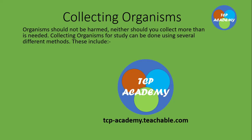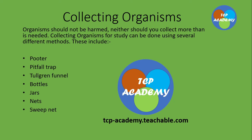Collecting organisms. Organisms should not be harmed, neither should you, more than is needed. Now, collecting organisms for study can be done using several different methods, and these include use of a pooter, pitfall traps, Tullgren funnels, bottles, jars, nets, sweep net, plankton net, and more — all of which are very important in our study of biology or environmental studies. Bottles and jars are pretty much useful, as well as the Tullgren funnel, the pooter, and the pitfall trap.